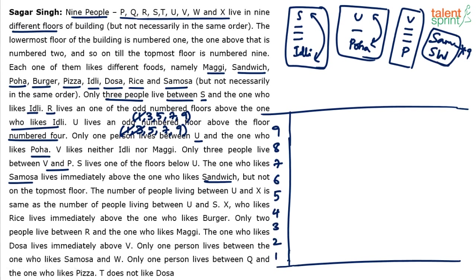The number of people living between U and X is the same as the number of people living between U and S. This means U must be between S and X — because equal distances from U to both S and X is only possible if U lies between them.